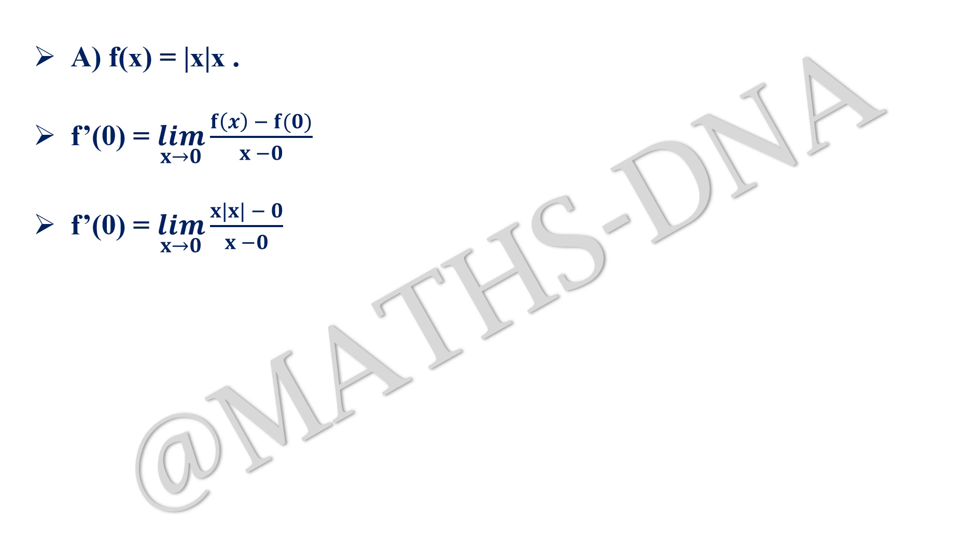Putting the value of f(x), that is x into mod x or mod x into x, then f'(0) equals limit x tends to 0, x mod x minus 0 upon x minus 0. x gets cancelled out and at x equals 0, mod 0 will be 0. So f'(0) equals 0.